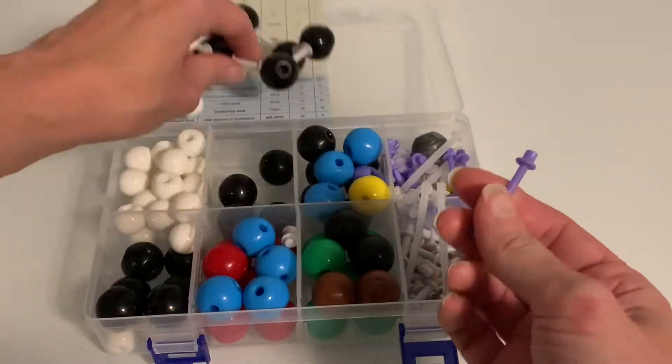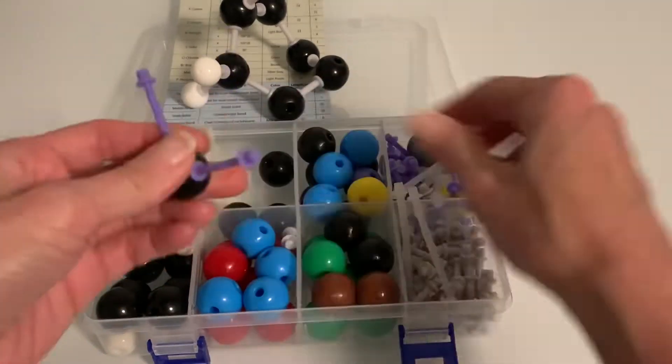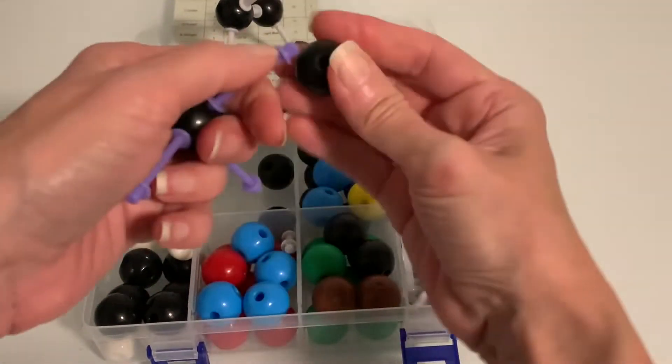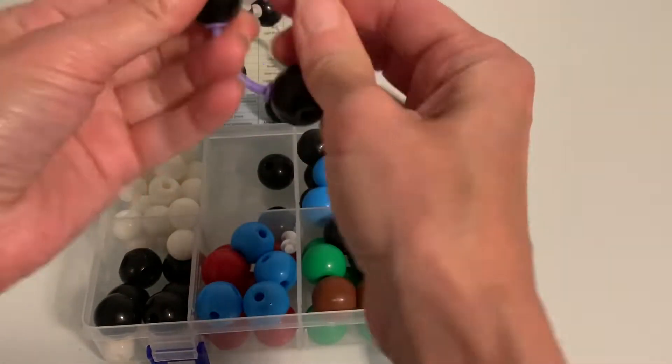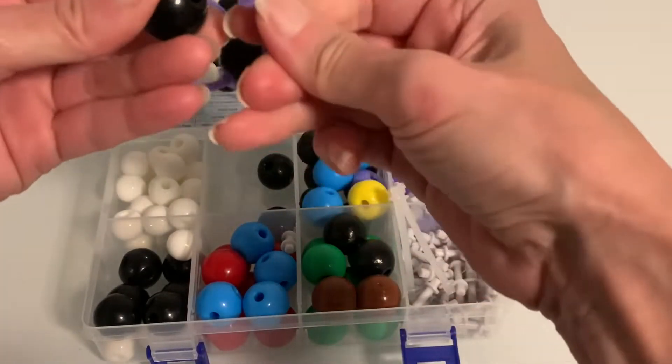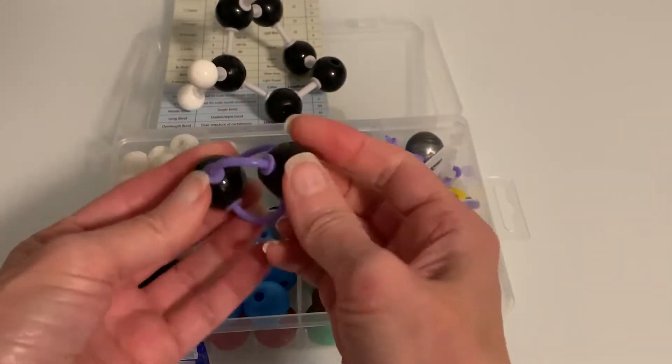The Linktour set comes with flexible bonds that you can use to make molecules with double bonds or triple bonds. Right here I'm showing you how you would use those flexible bonds to make a triple bond. These flexible bonds in the Linktour set work really well.